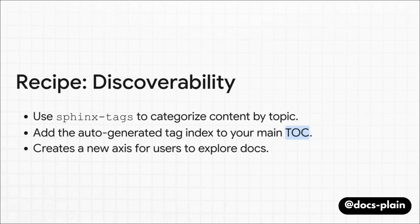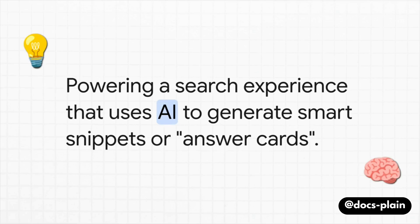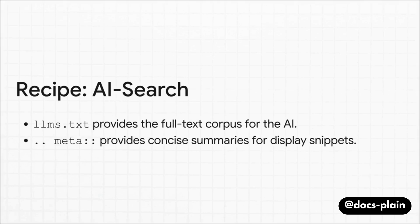Now let's look at a more hybrid goal: you want to power a search experience that uses AI to generate smart snippets or answer cards right there in the search results. For this powerful combo, you're going to need two things. First, LLMS.txt — that provides the full-text corpus that the AI can read and understand to find the real answer. And second, the meta-directive on each page — that gives you a perfect, concise summary as a high-quality snippet. It's the best of both worlds.